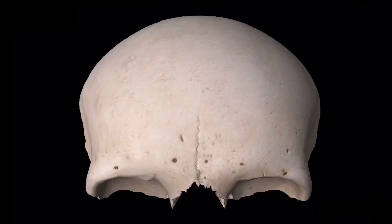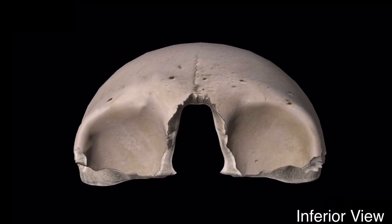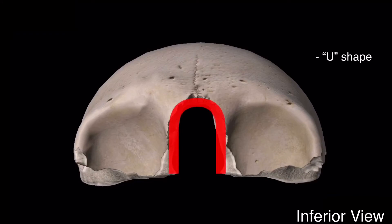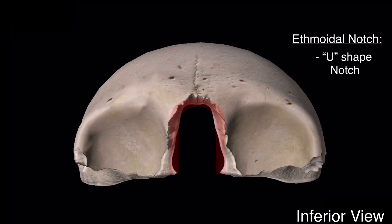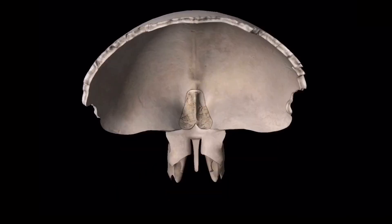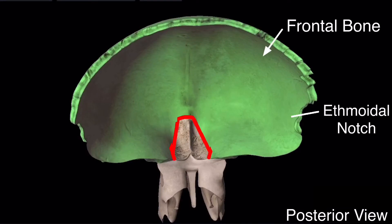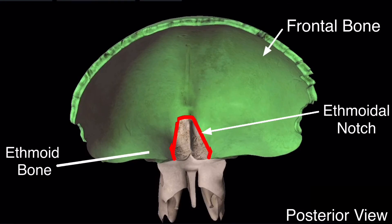If you look at the inferior view of the frontal bone, you will see a U-shaped notch called the ethmoidal notch, and in this notch lies the ethmoid bone. In the posterior view you can clearly see the frontal bone, the U-shaped ethmoidal notch, and the ethmoid bone lying within it.